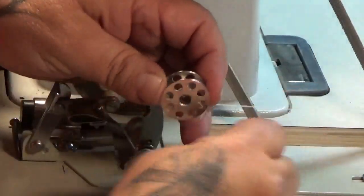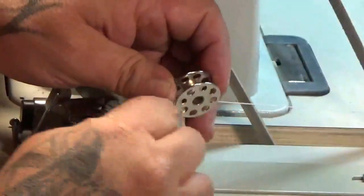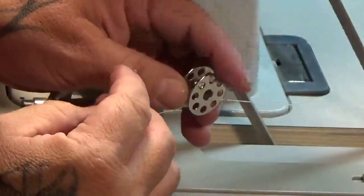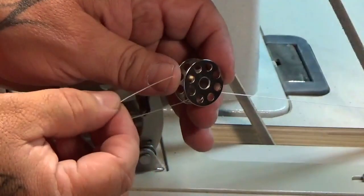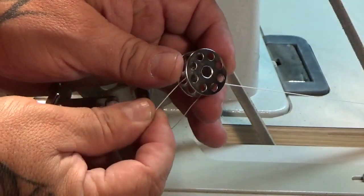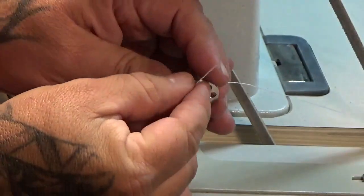I wind it around here about five times, and then I feed the thread through one of the eyelets on the bobbin.